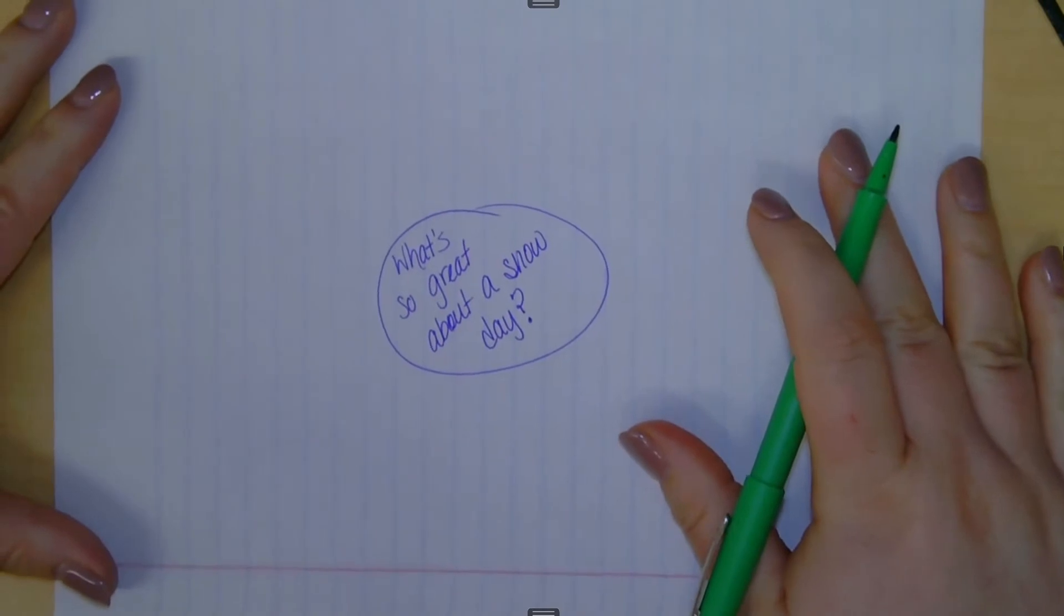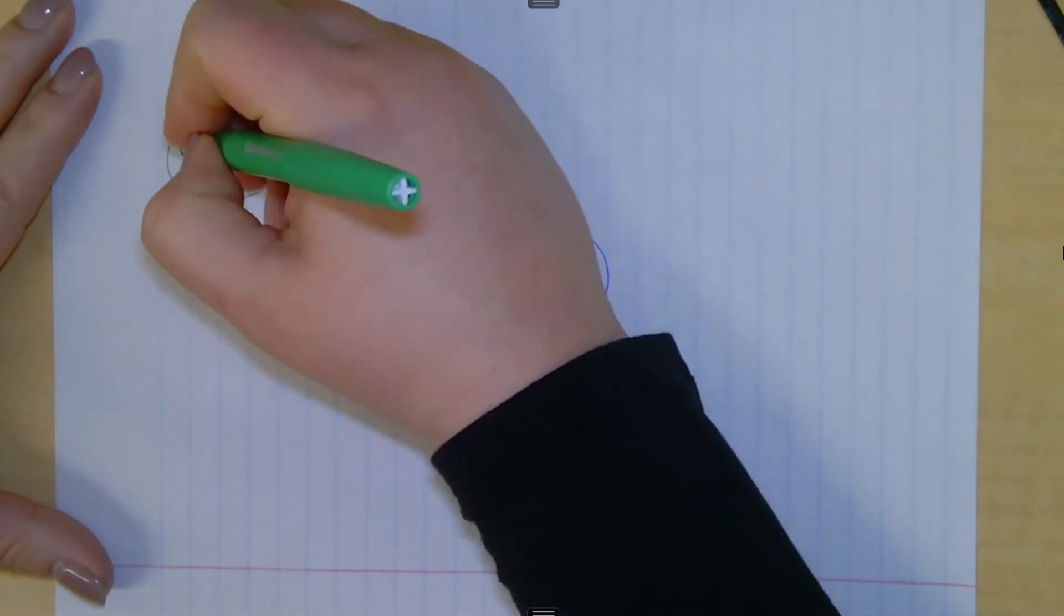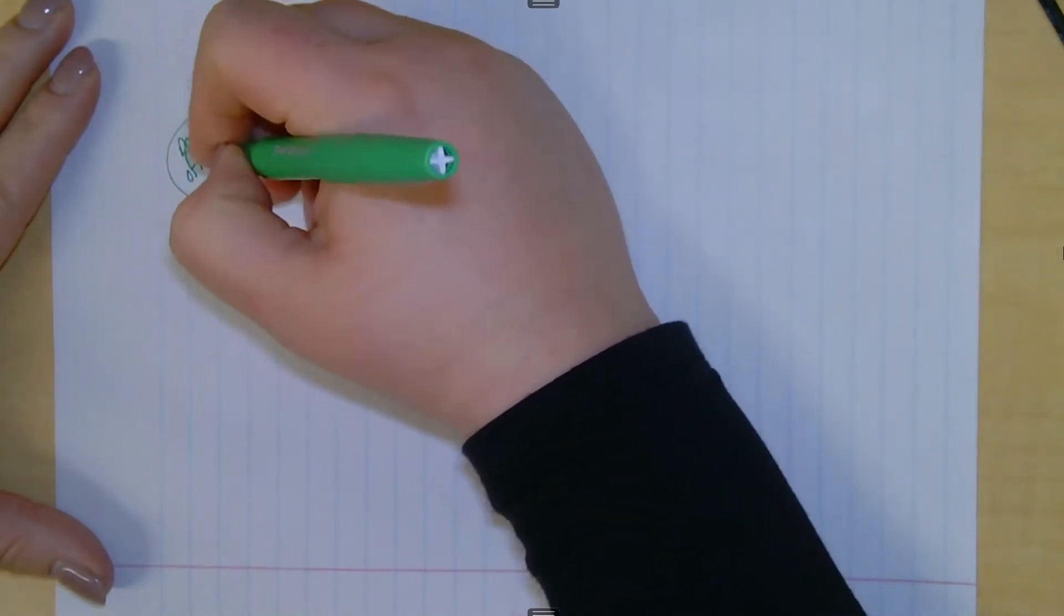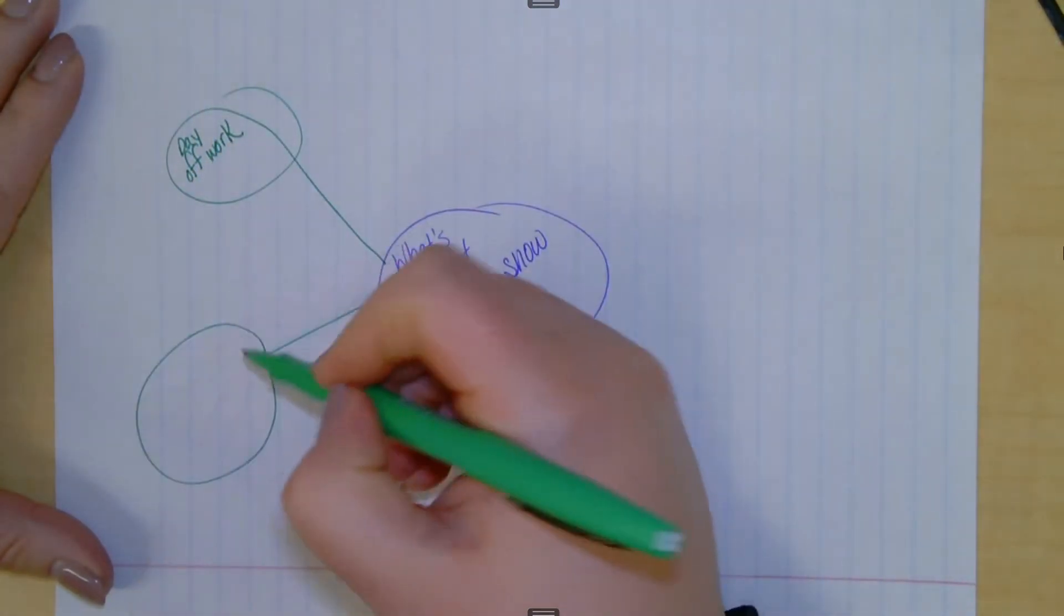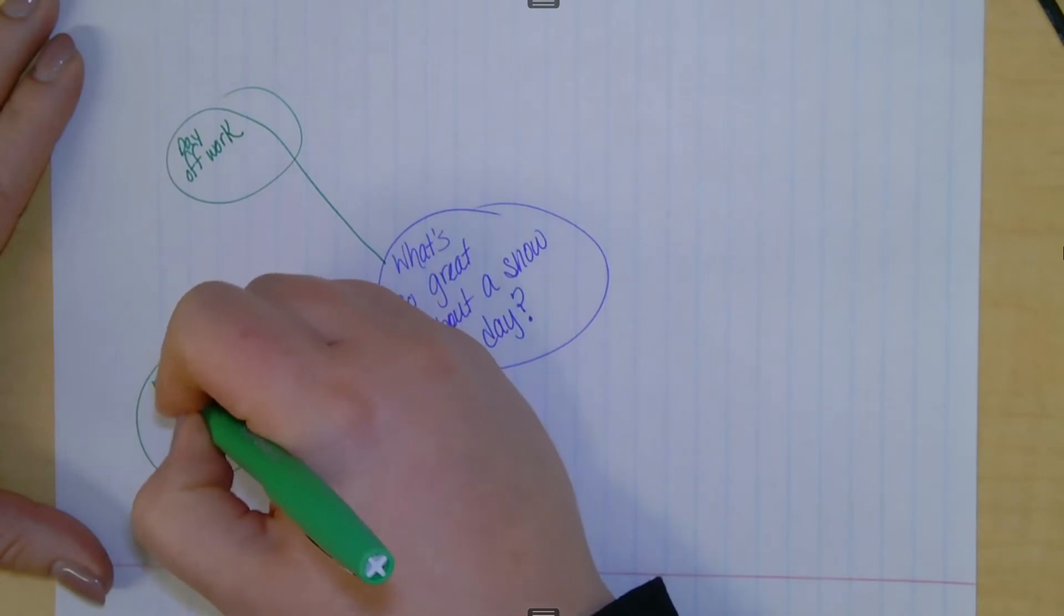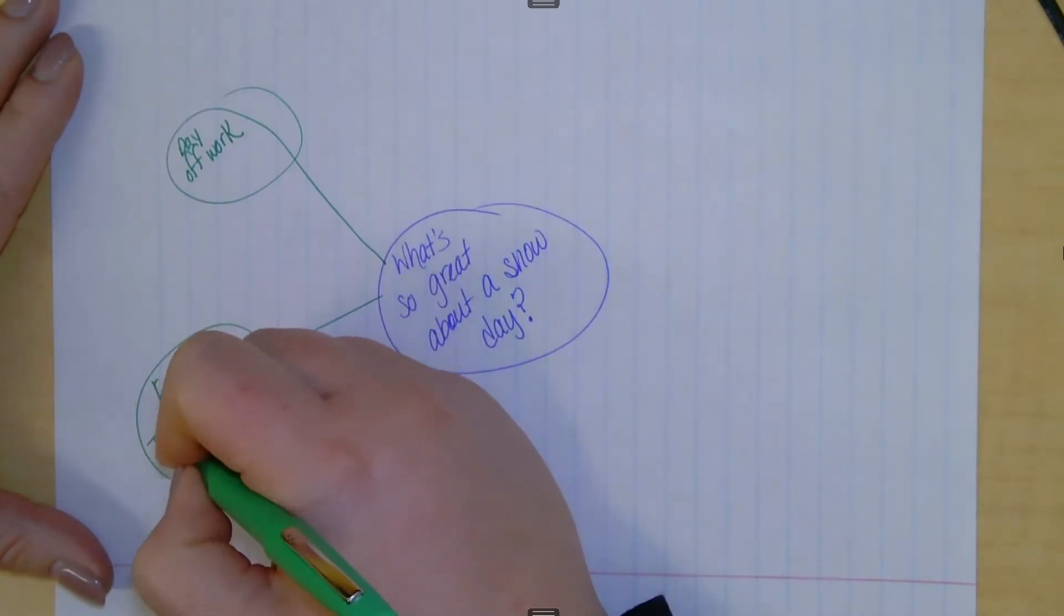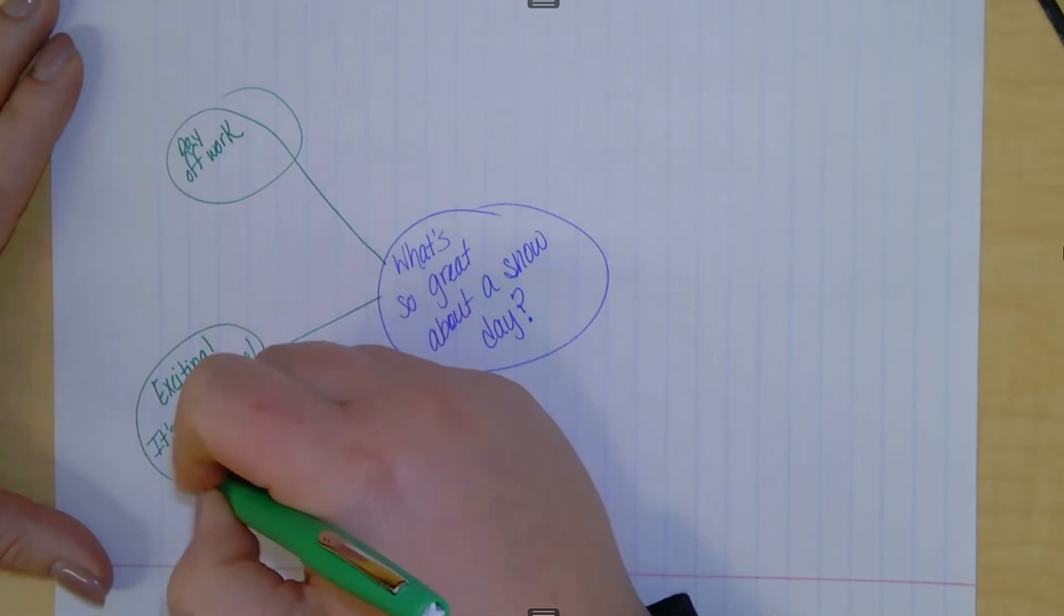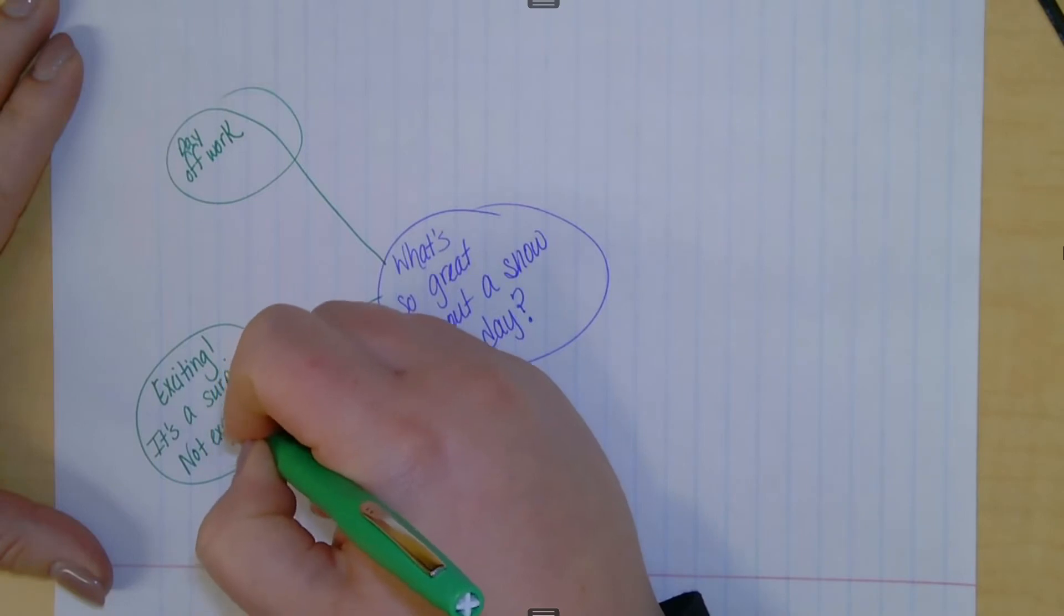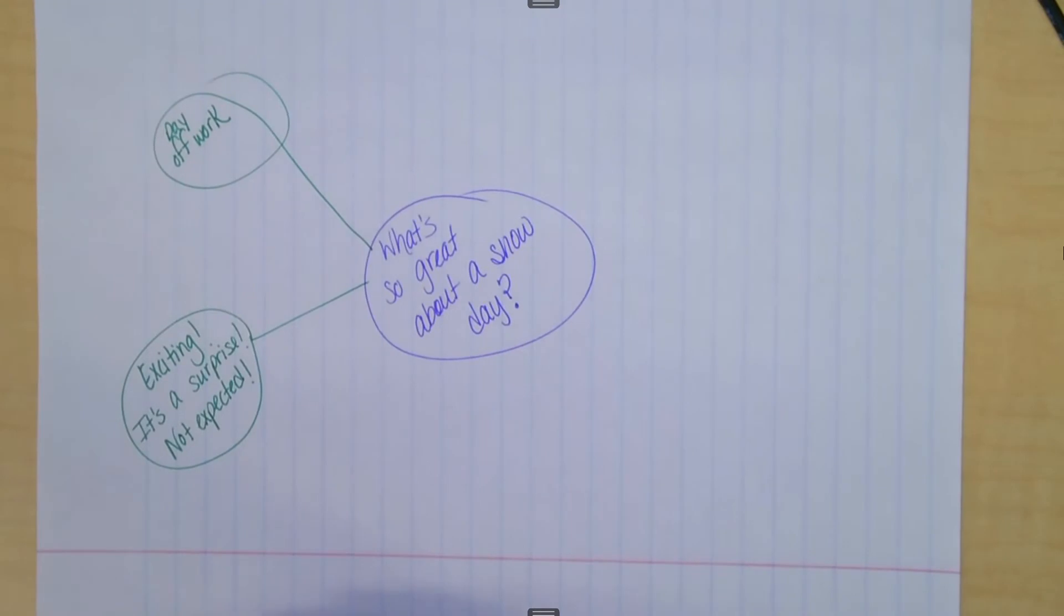When I think of a snow day, I think of a day off work. I also think it's exciting because it's a surprise. It's not expected. And kind of sloppy so I can write fast. So it's a day off work for me. It's exciting because it's a surprise. It's not expected.